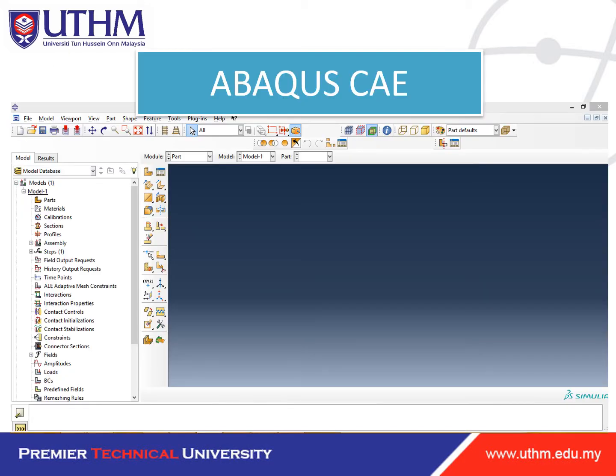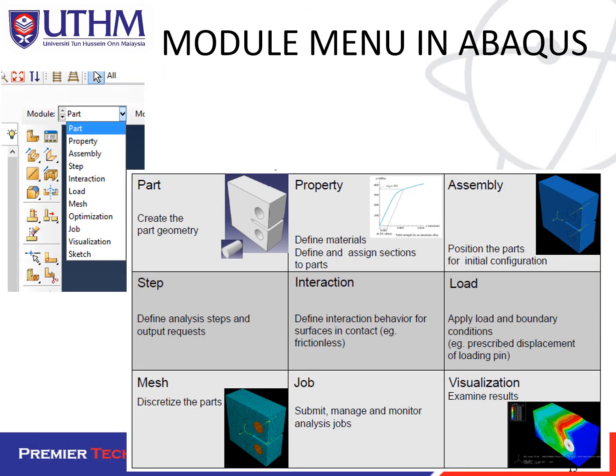When you open Abaqus CAE, you will see the main interface. This is where we are going to simulate. The module menu in Abaqus shows: Part, Property, Assembly, Step, Interactions, Load, Mesh, Optimizations, Job, Visualization, and Sketch.